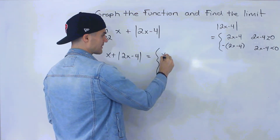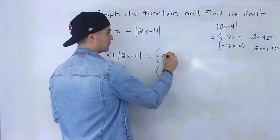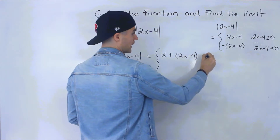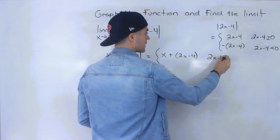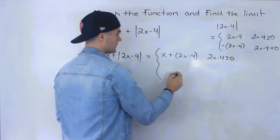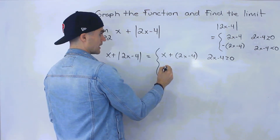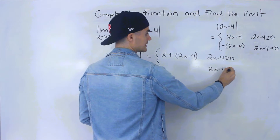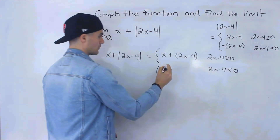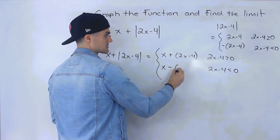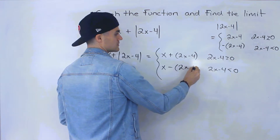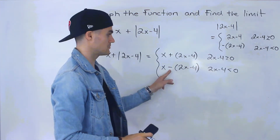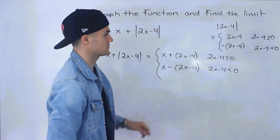So we'll have x plus 2x minus 4 when 2x minus 4 is greater than or equal to 0. And if 2x minus 4 is less than 0 — if it's negative — then we'll have x minus (2x minus 4). You have to make sure you put that expression in brackets, so we're subtracting that entire expression.